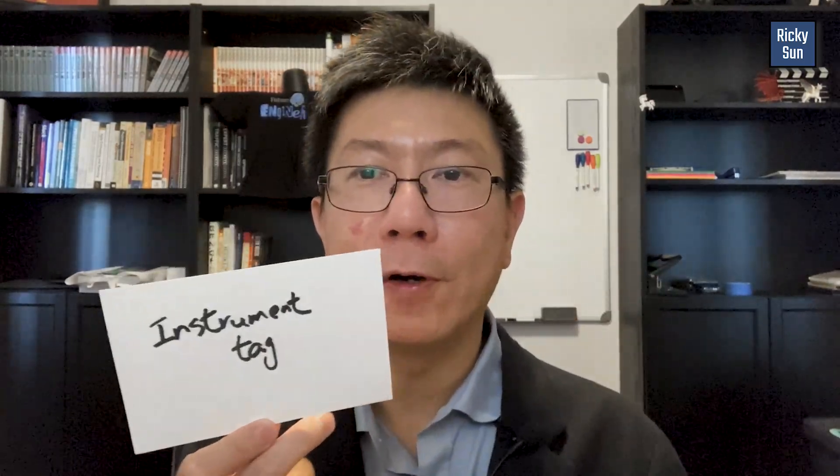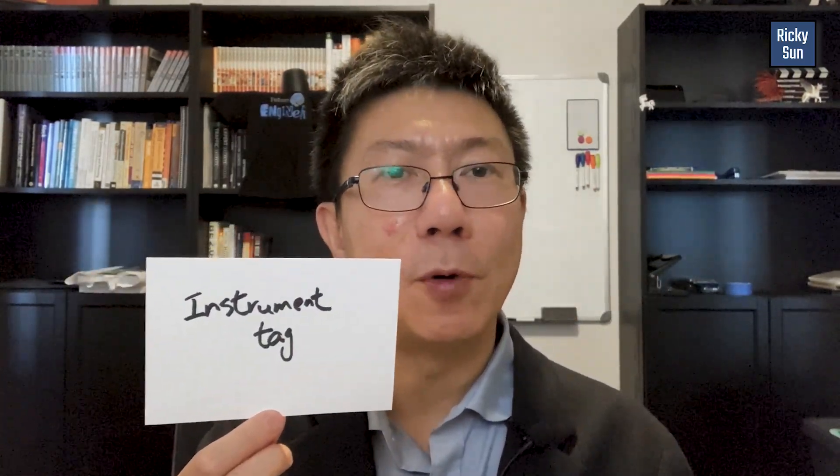I'm talking about the other attribute called instrument tag. This one is especially important for the OPC interface. Whatever item ID is in the OPC server, you have to have the corresponding item ID in the instrument tag attribute. You cannot have extra spaces or anything slightly off — it has to be the exact same item ID. Compression exception is the most common issue. I've worked with systems where the compression exception deviation is set to 100, but the data only moves by 0.1 or 0.2. That large deviation filters everything out, which is why you don't get data.